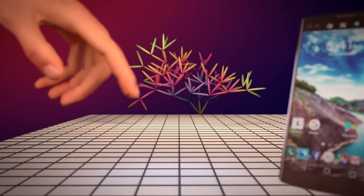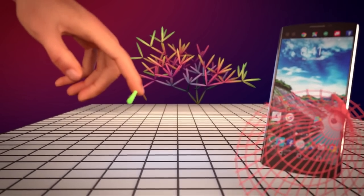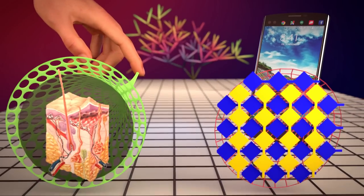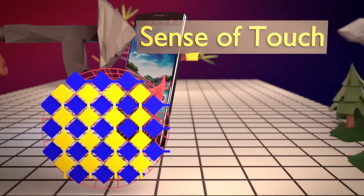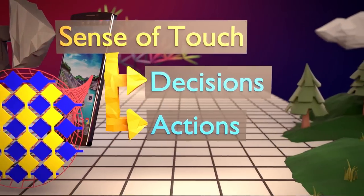Have you ever thought of your smartphone's multi-touch screen as functionally similar to your body's skin? Stay with me here. Both are able to sense multiple touches, and then both are able to make decisions and act on those inputs.